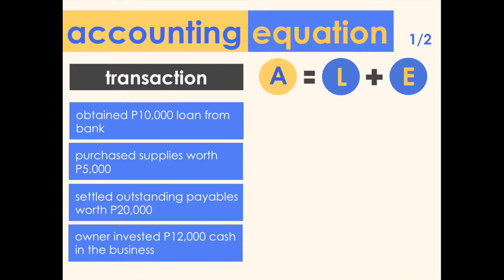Now let's try applying the accounting equation in analyzing transactions. To properly determine the impact, first identify the accounts affected — like what we did in part two. Then determine whether the account is an asset, liability, or equity, and assess if there was an increase or decrease in that account. Since this is the accounting equation, make sure that the impact on both sides are always equal.